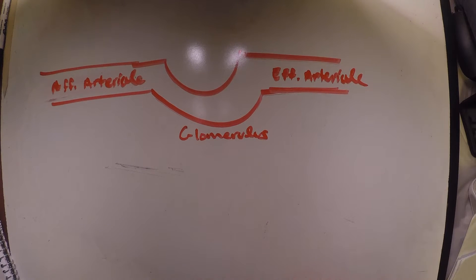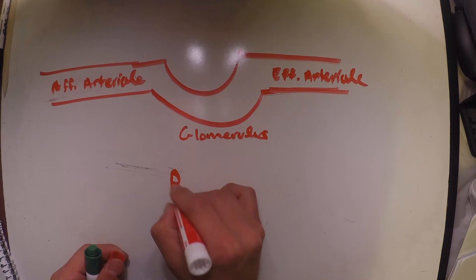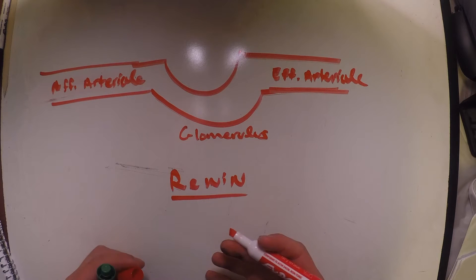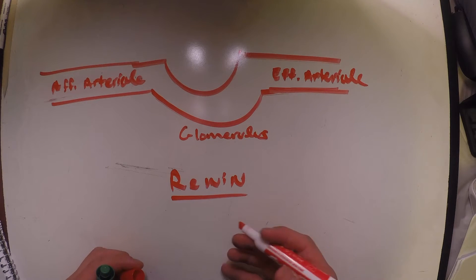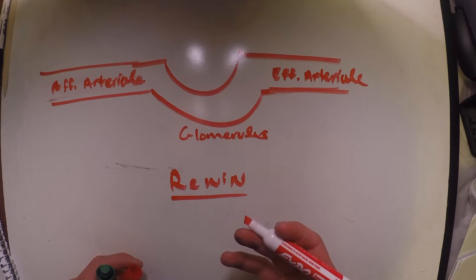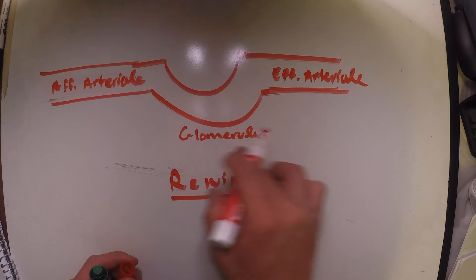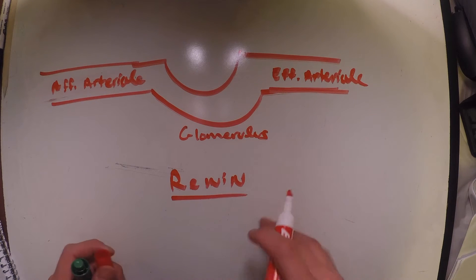Okay, so one of the main modes of regulation within our kidney is going to be something known as renin. Renin is an extremely important proteolytic enzyme that is released when our blood pressure drops. We don't want our blood pressure to drop because that can force our glomerulus or capillaries to collapse.